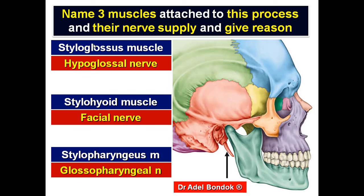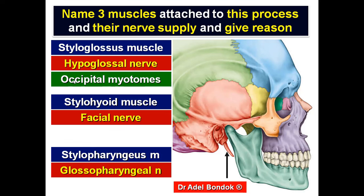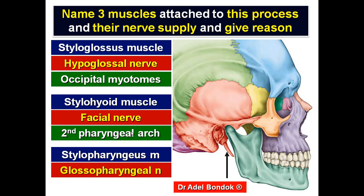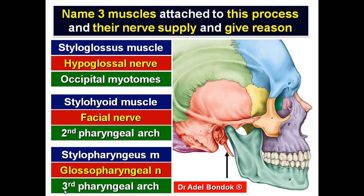The styloglossus is supplied by the hypoglossal nerve because it develops from the occipital myotomes, which are supplied by the hypoglossal nerve. The stylohyoid is supplied by the facial nerve because it develops from the second pharyngeal arch. The stylopharyngeus is supplied by the glossopharyngeal nerve because it develops from the third pharyngeal arch.